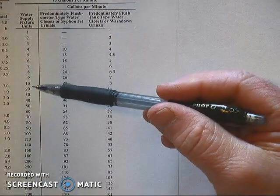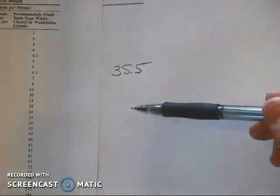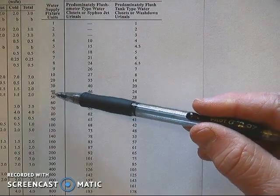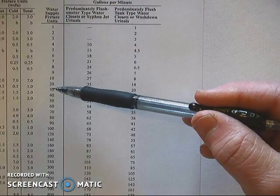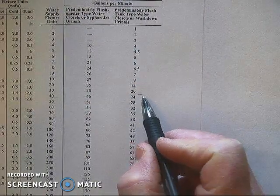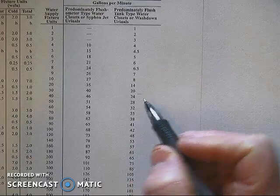As you look at the left hand side you'll notice 35.5 is not on that side of the table, so we're going to have to do some interpolation to determine where that's going to fall over on this side of the table in the gallons per minute column.